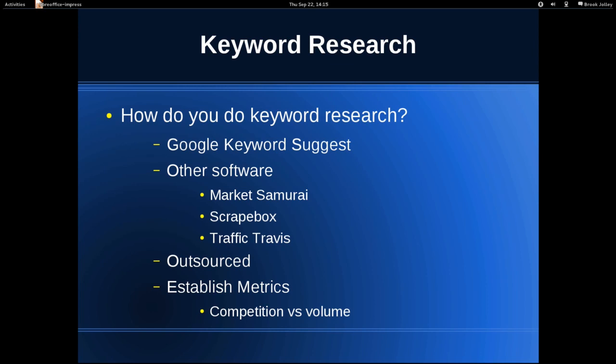Another thing you can do is outsource it. An awesome resource for outsourcing is Fiverr.com — that's F-I-V-E-R-R.com. You can go there and get people to do keyword research for you for $5. Or you could pay someone $250 to do your keyword research and waste $250. You could have gone to Fiverr, spent $15, got keyword research from three different people, compared what those three people said, and gotten a by-committee keyword research for $15 rather than spending a fortune.